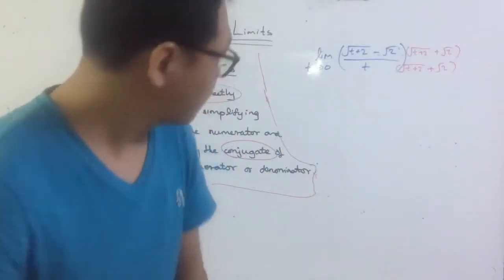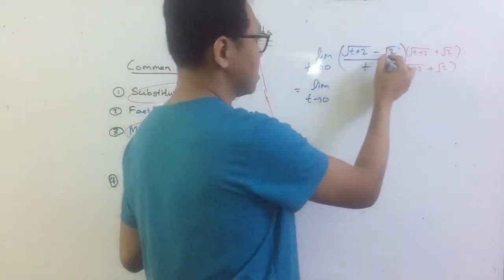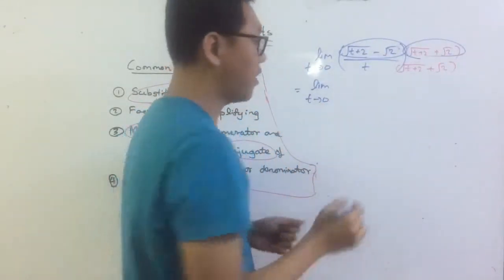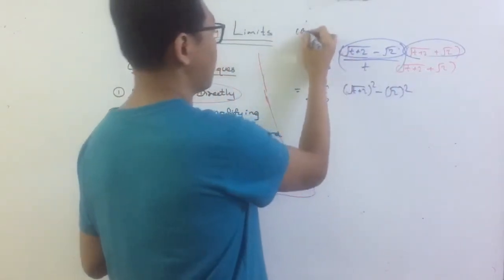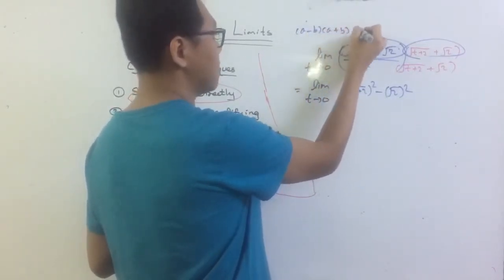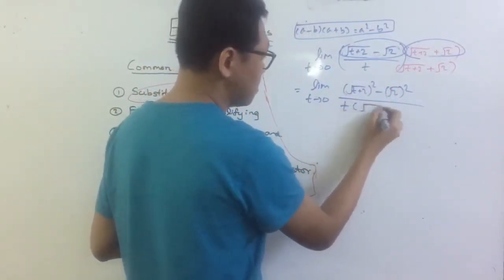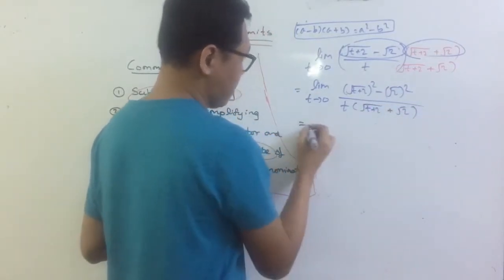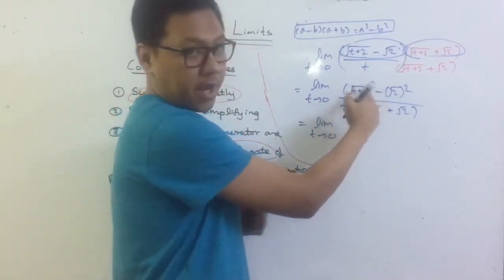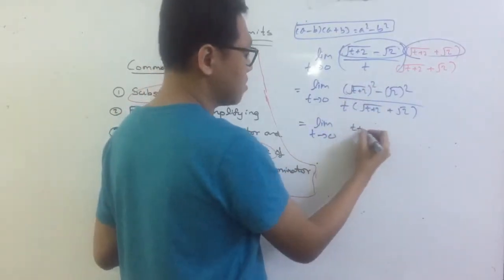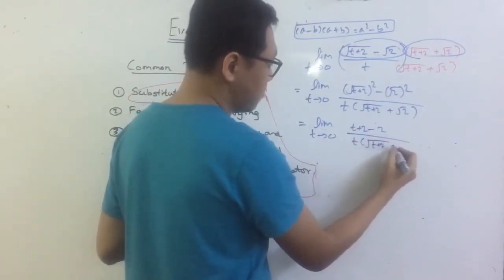Let's see what happens. Limit as t approaches 0: in the numerator, using (A minus B)(A plus B) equals A² minus B², it becomes (t plus 2) minus 2. In the denominator, we have t times (square root of t plus 2 plus square root of 2). Then simplifying: (t plus 2) minus 2 gives us t in the numerator. The t in the numerator and the t in the denominator cancel, giving us limit as t approaches 0 of 1 over (square root of t plus 2 plus square root of 2).